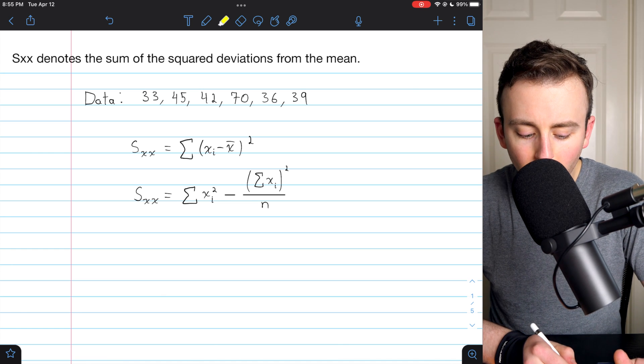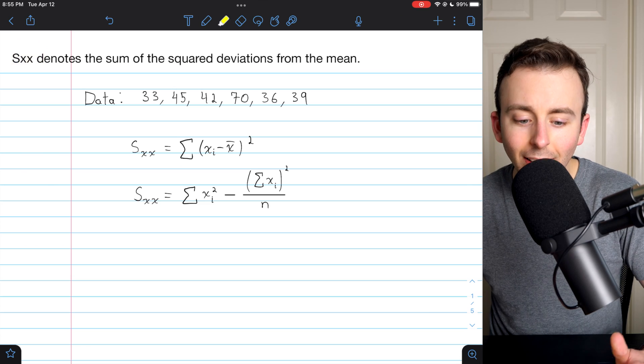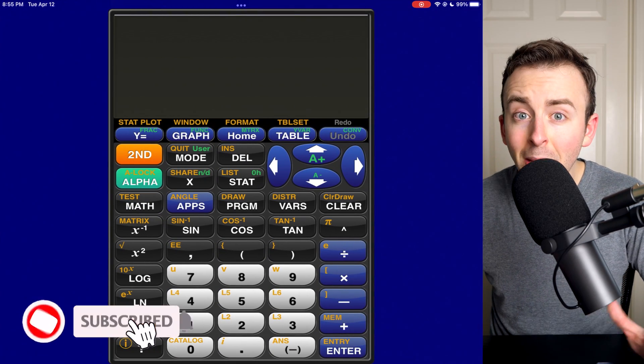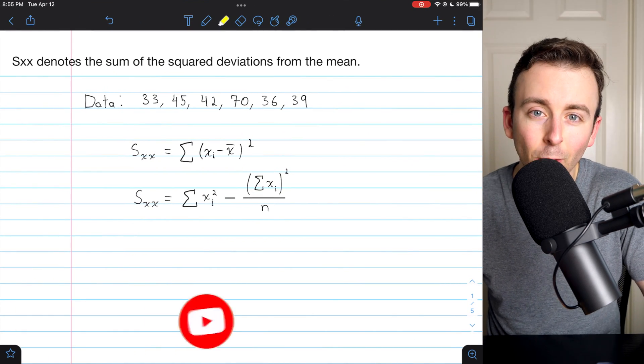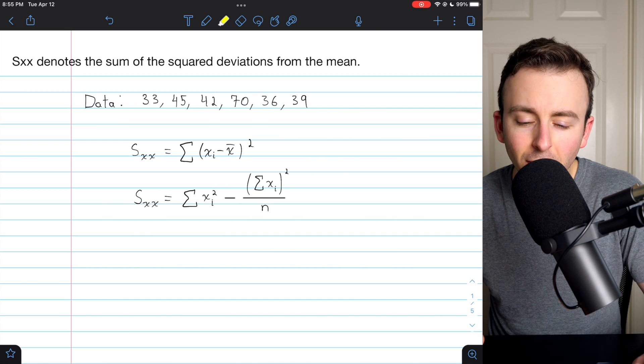Hi there. Let's go over how to calculate what's called SXX for a data set using a calculator. I'll show you how to do it using this calculator, which is made to resemble the TI-83, and it's probably pretty similar to your calculator. I'll also leave a link in the description to a more in-depth lesson on this topic.